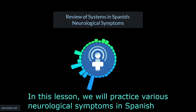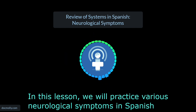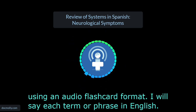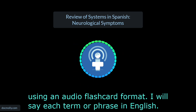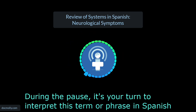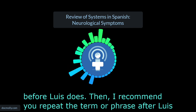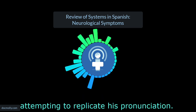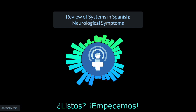In this lesson, we will practice various neurological symptoms in Spanish using an audio flashcard format. I will say each term or phrase in English. During the pause, it's your turn to interpret this term or phrase in Spanish before Luis does. Then, I recommend you repeat the term or phrase after Luis, attempting to replicate his pronunciation. ¿Listos? ¡Empecemos!